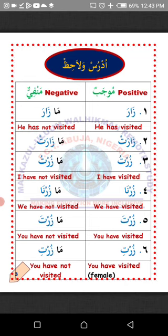Number three — Zurtu, I have visited; Mazurtu, I have not visited. Number four — Zurna, we have visited; Mazurna, we have not visited. Number five — Zurta, you have visited; Mazurta, you have not visited — talking to a single male person. Number six — Zurti, you have visited — talking to a single female person; Mazurti, you have not visited. La'allaka fahimt? I hope you understand. Masha'Allah.